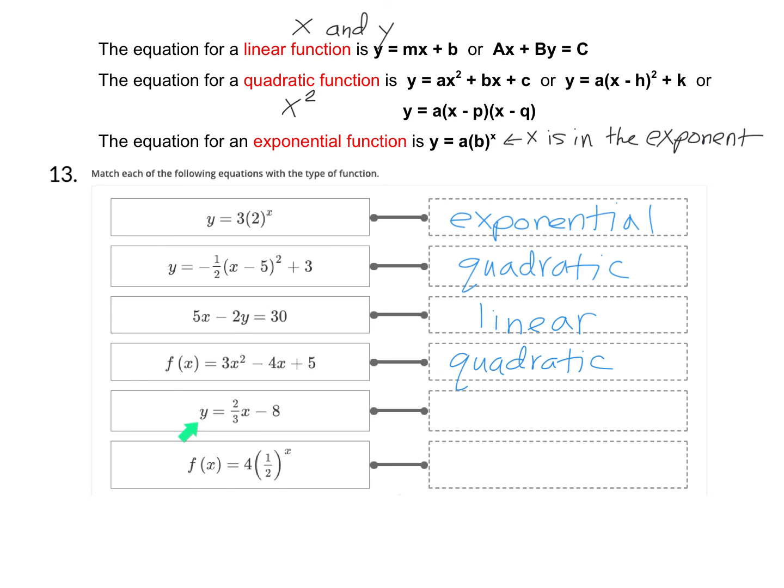y equals 2 thirds x minus 8. You'll notice that's in the form y equals mx plus b. There's just an x and a y, no exponents. That makes this another linear function.